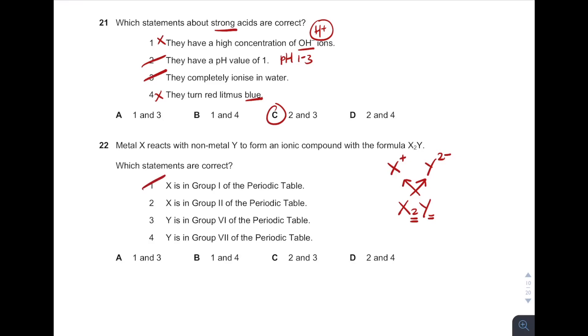So first statement is correct, it cannot be group 2. Y negative ion with 2 negative charge means it has to be from group 6. So third statement is correct, fourth is incorrect. So answer 1 and 3, therefore answer is A.